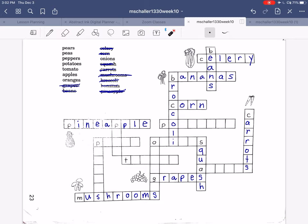Pears, one, two, three, four, five. Peas, one, two, three, four. Peppers, one, two, three, four, five, six, seven. And potatoes, one, two, three, four, five, six, seven, eight.